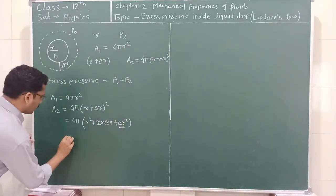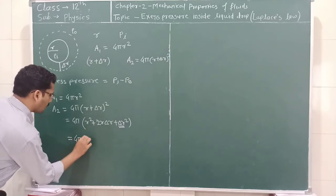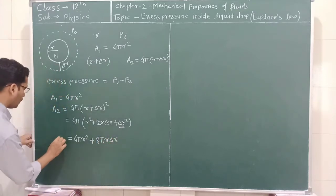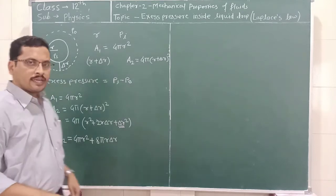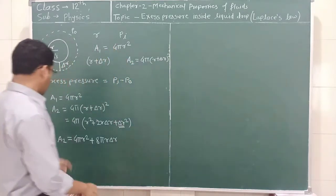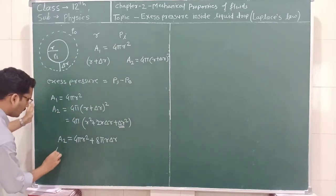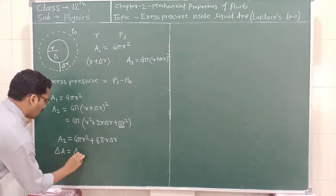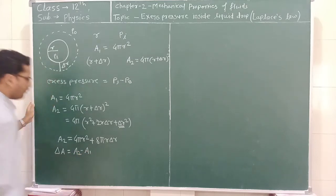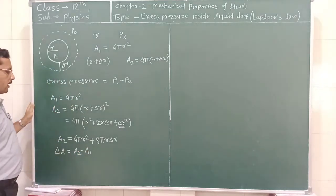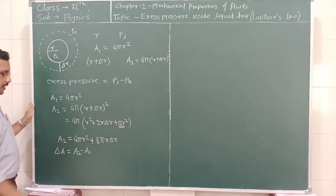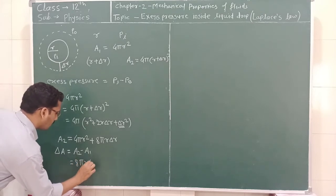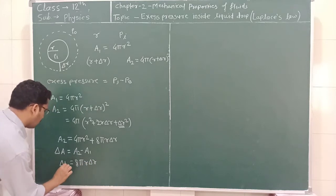So we can write A2 is equal to 4πR² plus 8πR·δR. The increase in the surface area delta A is equal to A2 minus A1. We can see that A1 is equal to 4πR² and A2 is equal to 4πR² plus 8πR·δR. The 4πR² terms cancel, and the remaining change in surface area is 8πR·δR.